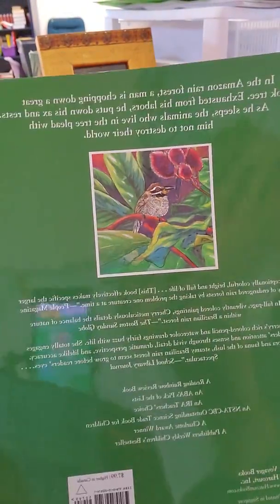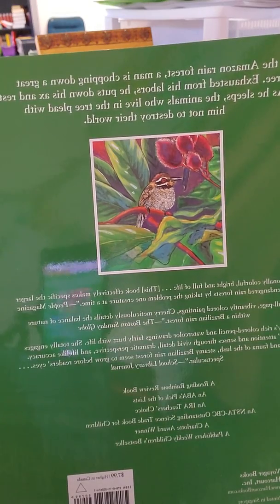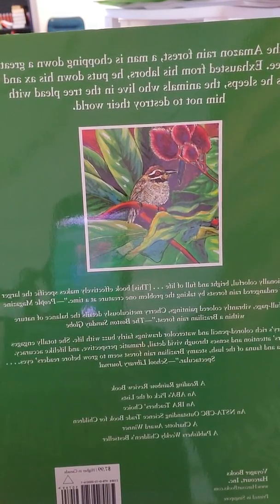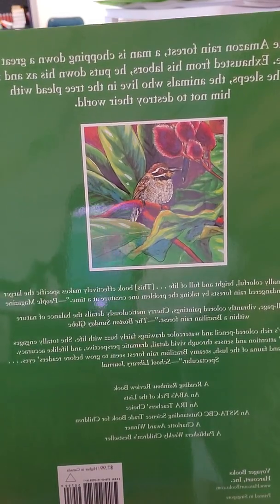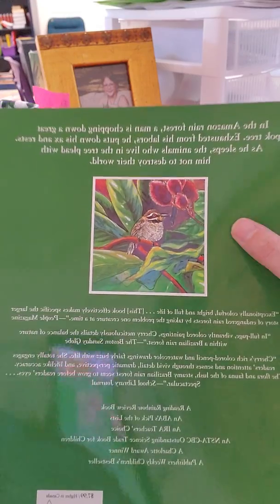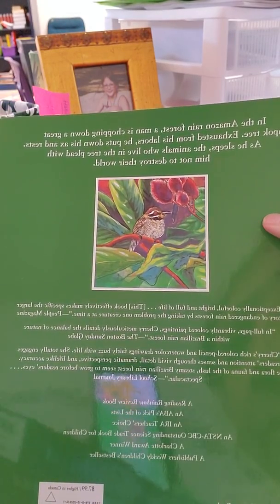Alright, on the back it says, In the Amazon Rainforest, a man is chopping down a great kapok tree. Exhausted from his labors, he puts down his axe and rests. As he sleeps, the animals who live in the tree plead with him not to destroy their world. And there's a picture of a bird and the foliage.